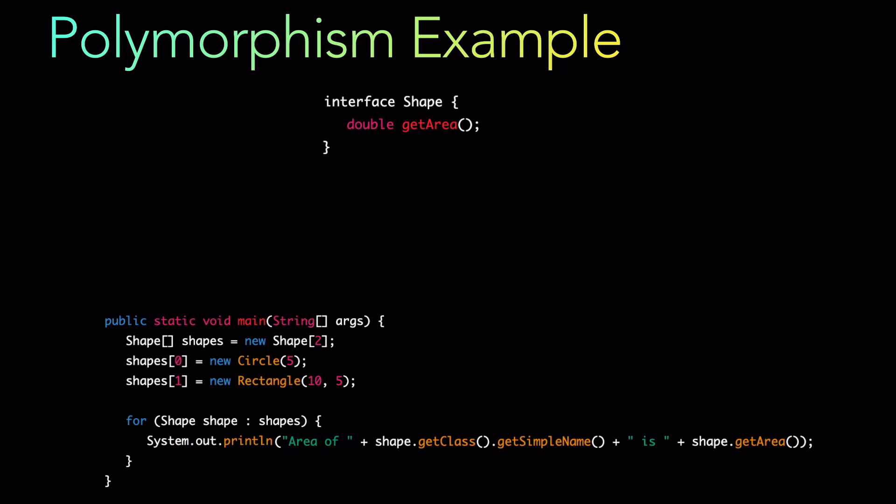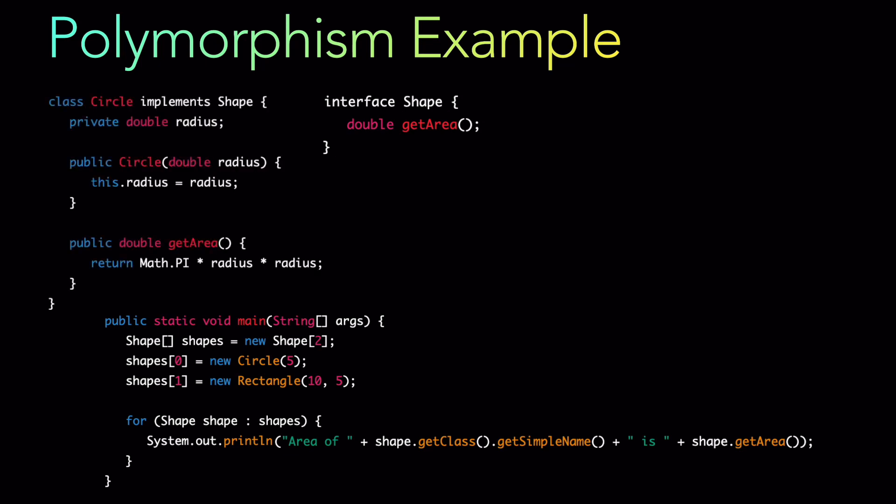The interface is going to be very simple. We define an interface shape which has a getArea method that returns a double. This interface will be implemented by two classes — circle and rectangle. The circle class implements shape. Inside it, there is a private property radius, a constructor to the circle shape, and it implements the area method, which is pi r squared.